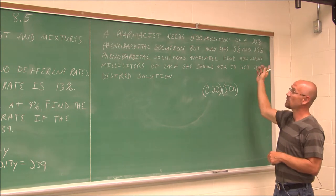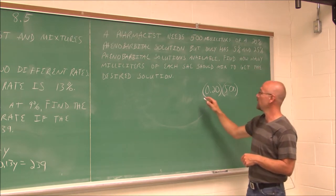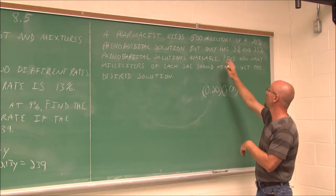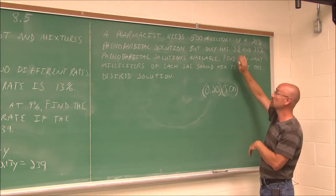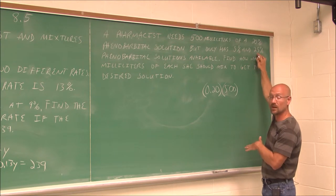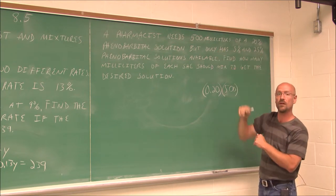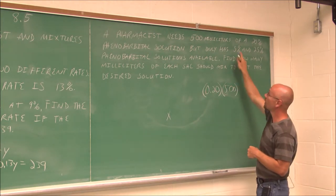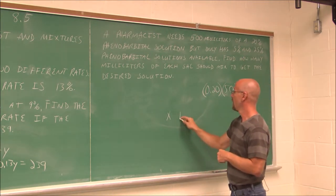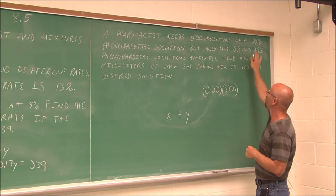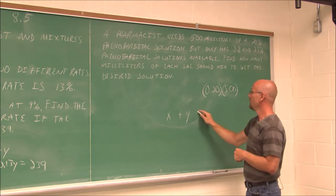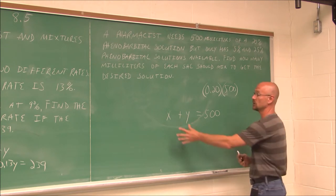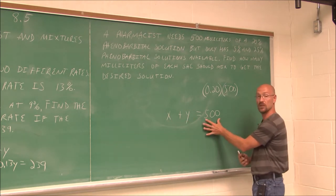But we only have 5% and 25% available. Well, let's think about it this way. If we need 500 milliliters, we're going to have some milliliters at 5% and some milliliters at 25% for a total of 500 milliliters. Well, let's call x to be our 5% solution and y to be our 25% solution.